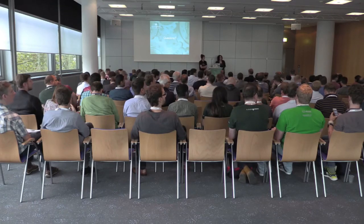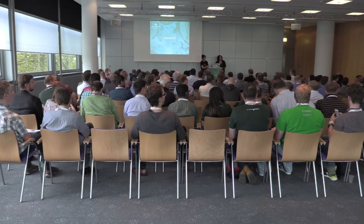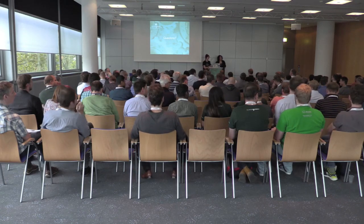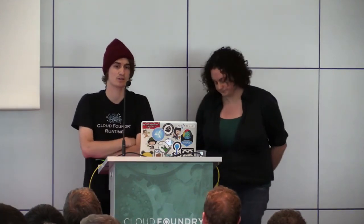Question: If developers each build locally, isn't there a risk of environment skew across a team — different images from different environments? One of the nice things about the 'from' directive is you can specify a base image. If you're worried about skew across Docker images, you can have your organization create a standard base image that everyone builds from.